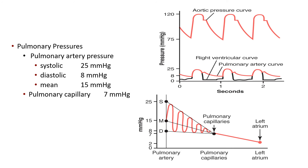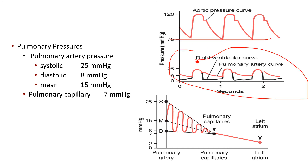Looking at pulmonary pressures — unlike the systemic circulation, the pressures on the pulmonary side or the right circuit of the heart are generally pretty low. The systolic peak pressure in the pulmonary artery only gets up to about 25 millimeters of mercury, diastolic about eight, with a mean of about 15.